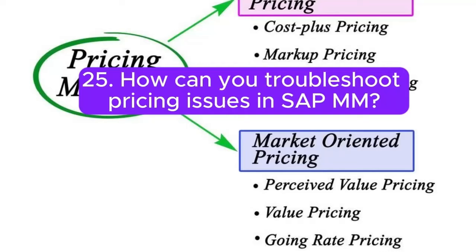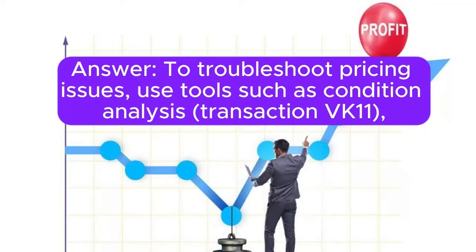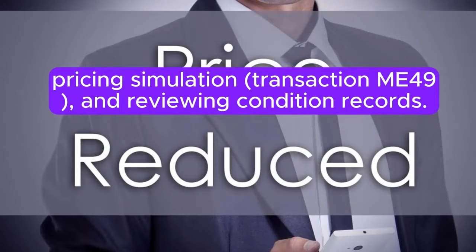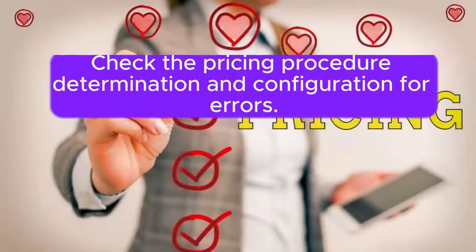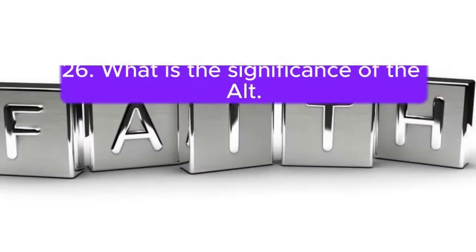Question 25: How can you troubleshoot pricing issues in SAP? Answer: To troubleshoot pricing issues, use tools such as Condition Analysis (Transaction VK11), Pricing Simulation (Transaction ME49), and reviewing condition records. Check the pricing procedure determination and configuration for errors.